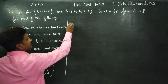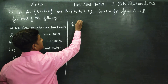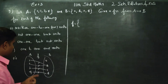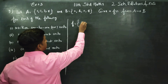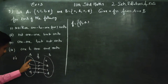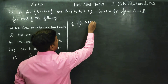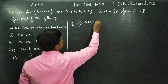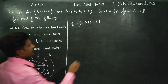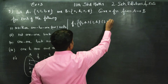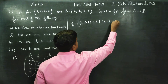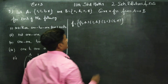What will my set be? 1 maps to B, 2 maps to B, 3 maps to C, 4 maps to D. This is one way of writing the function.